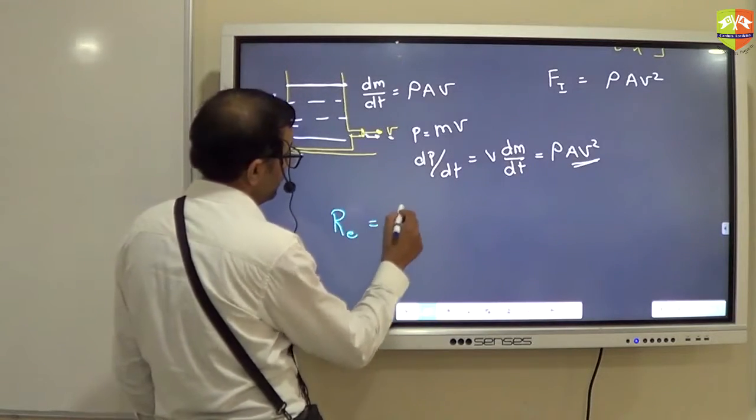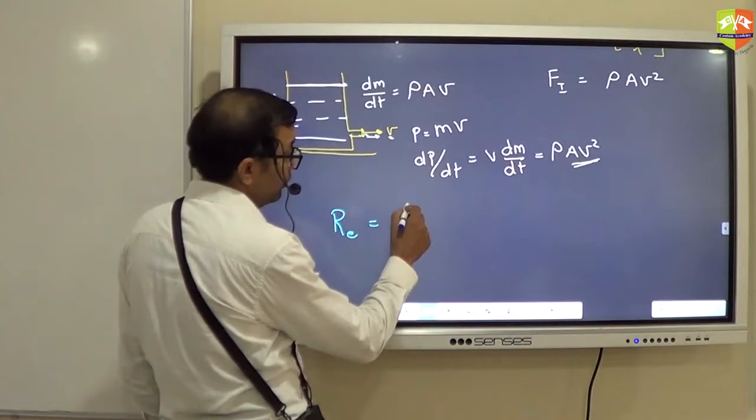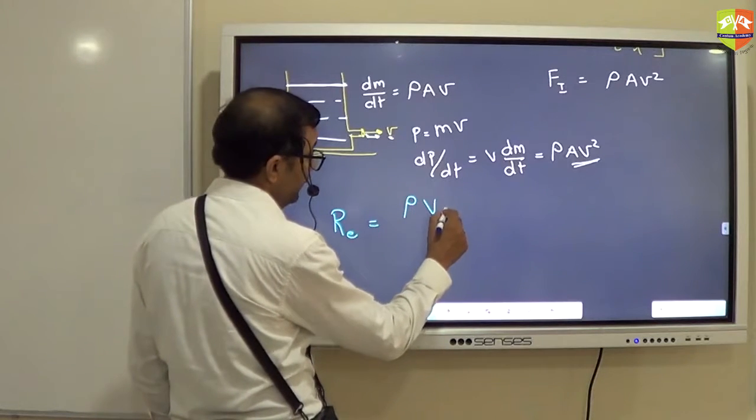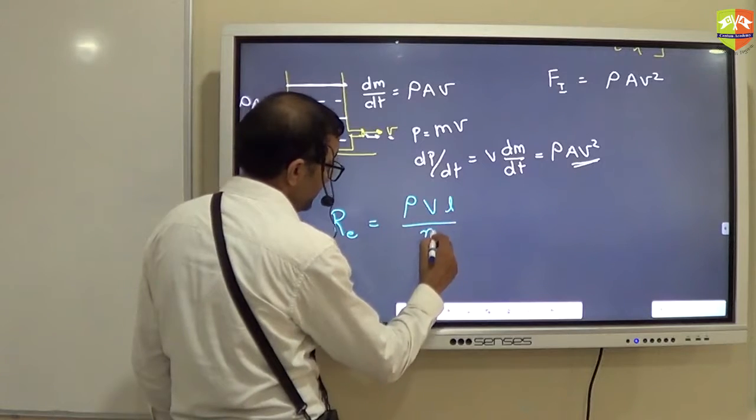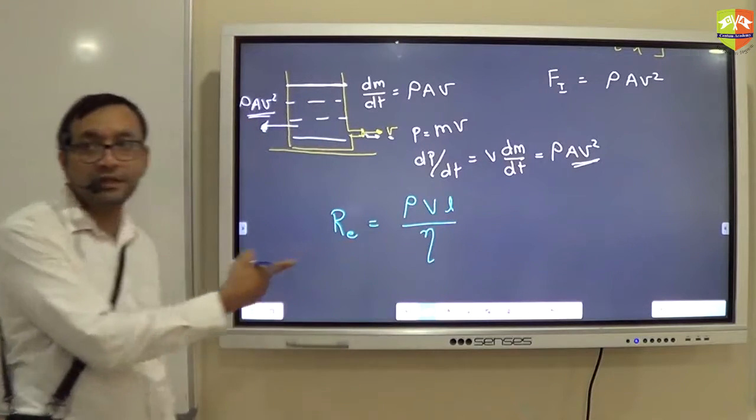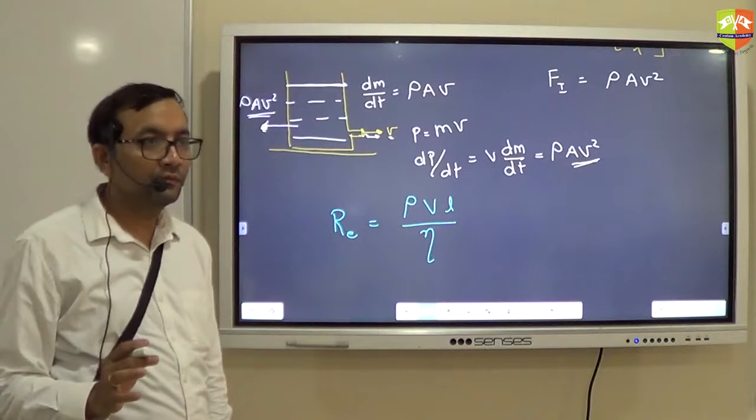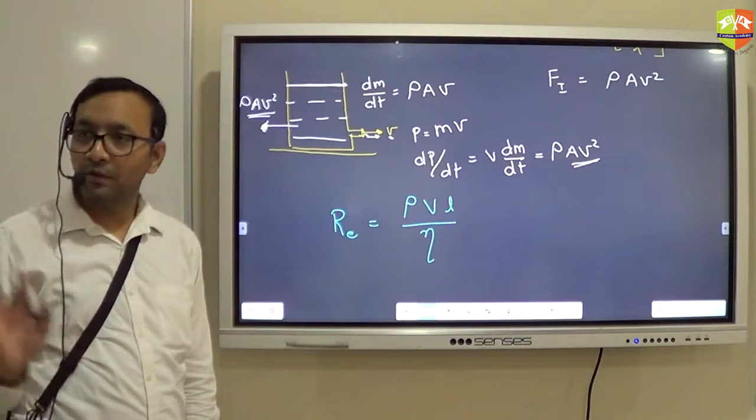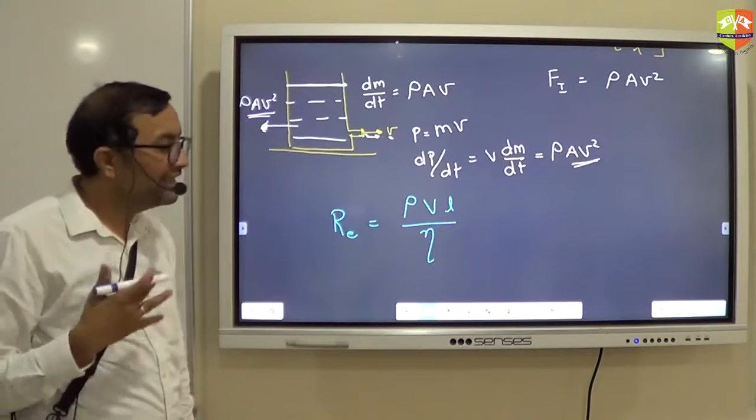So what it becomes? Inertial divided by viscous, can you divide it? Tell me what you will get. So Reynolds number is rho V L by eta. This is dimensionless, it has no dimensions.